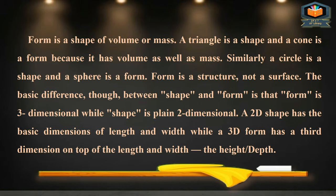Form is a structure, not just a surface. Form is 3D-dimensional while shape is plain 2D-dimensional. A 2D shape has the basic dimensions of length and width, while a 3D form has a third dimension — height or depth — in addition to length and width. The word 'form' is used for 3D shapes and 'shape' is used for 2D shapes.